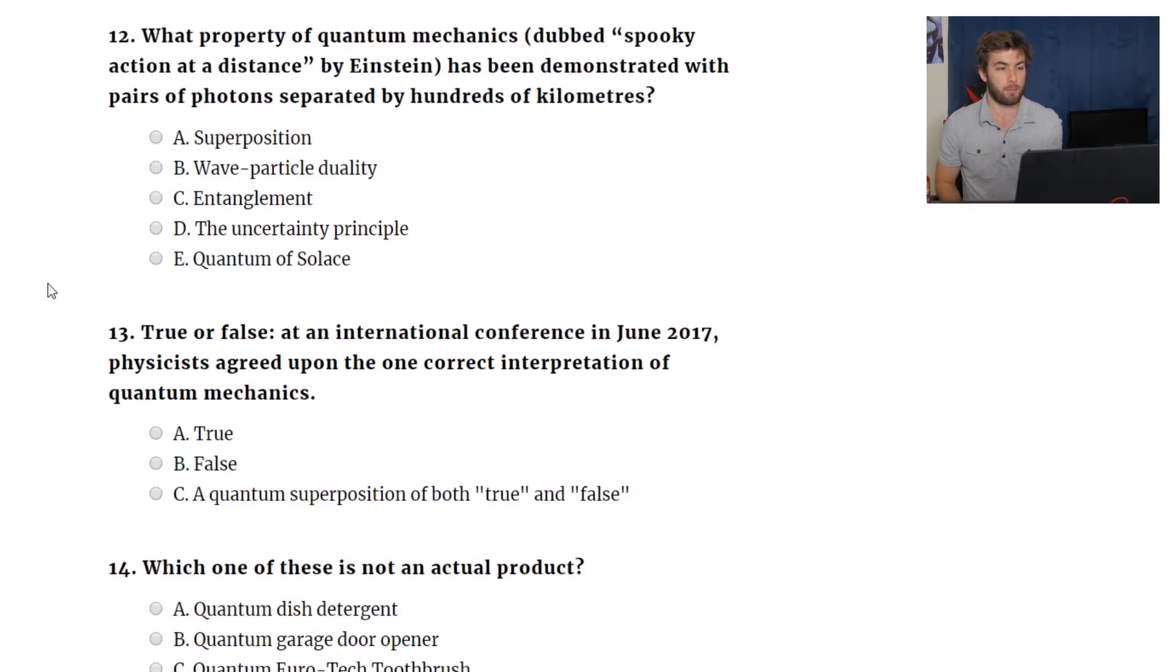What property of quantum mechanics dubbed spooky action at a distance? I've heard that so many times, it's entanglement, but let's just pretend like we don't know the answer. Has been demonstrated with pairs of photons separated by hundreds of kilometers. Superposition, wave-particle duality, entanglement, the uncertainty principle, or the quantum of solace. It's entanglement. When it's with photons, I know that you can pass it through different types of crystals and entangle the photons, like spontaneous parametric down-conversion. But that's just a fun fact. Entanglement.